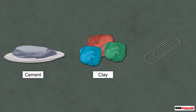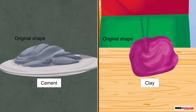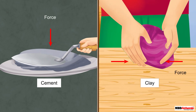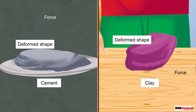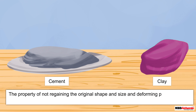But not all solid bodies are elastic. Some solids get permanently deformed after force is applied on them. For example, when you apply force on a lump of cement or clay, its shape changes and it never regains its original shape even after removing the applied force.